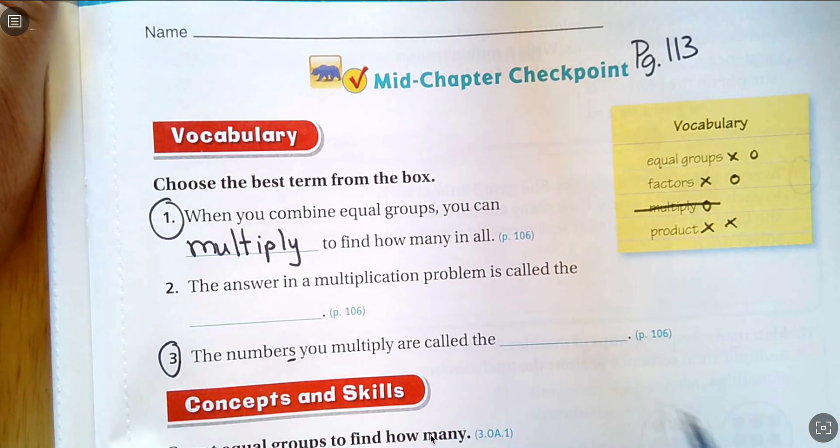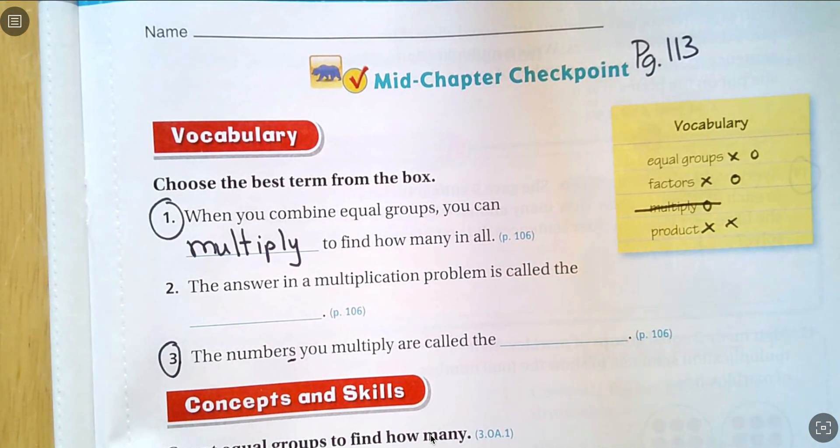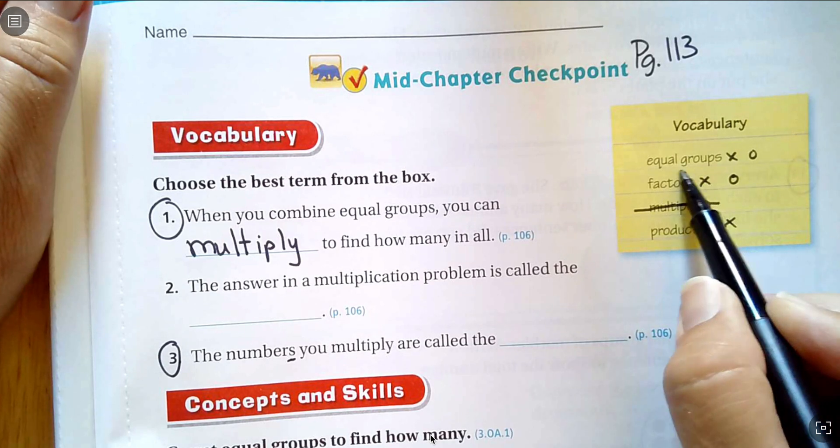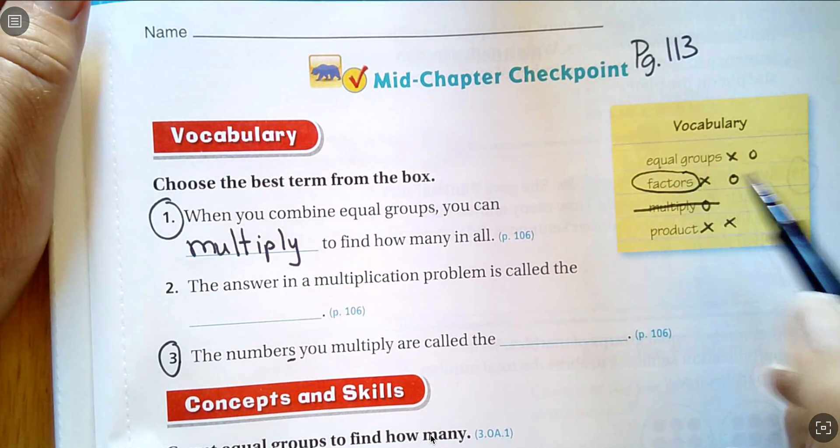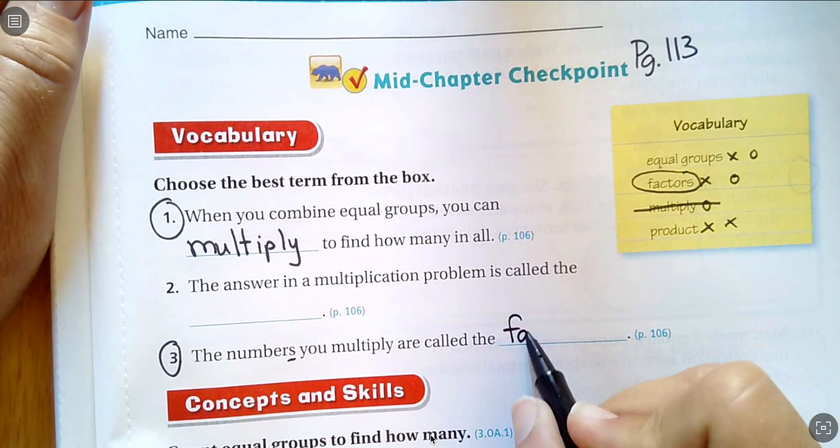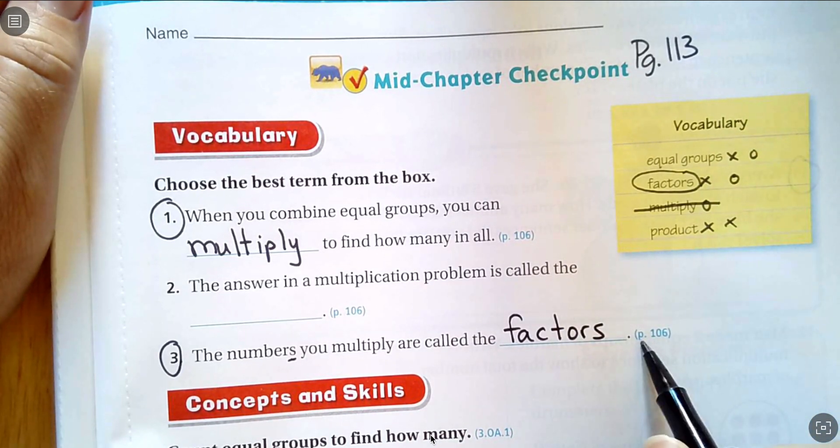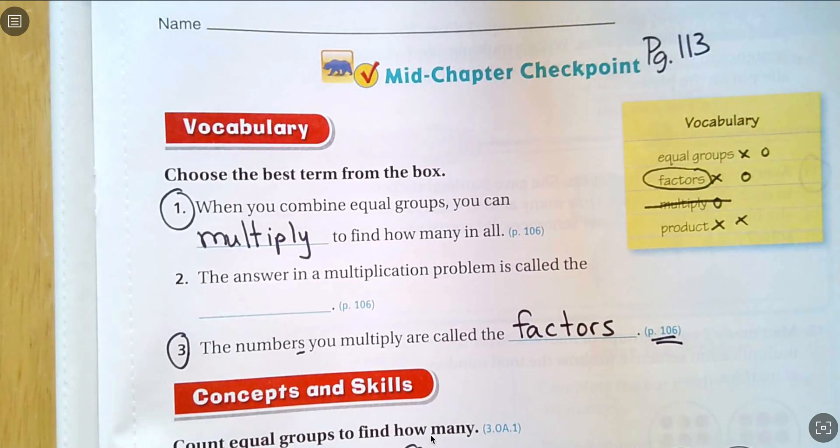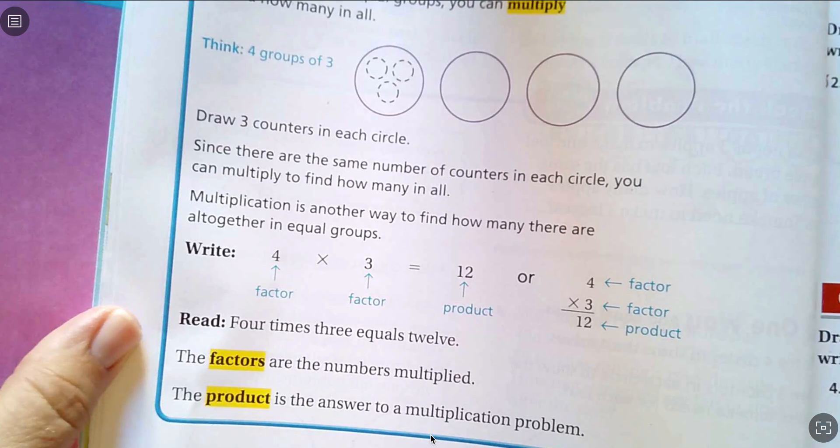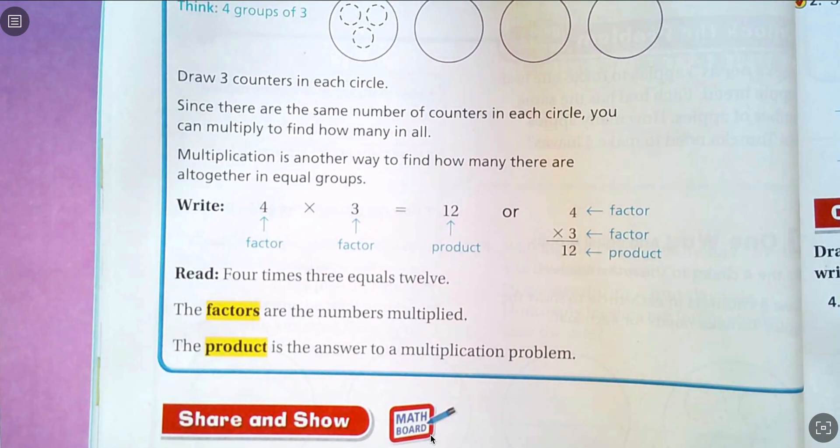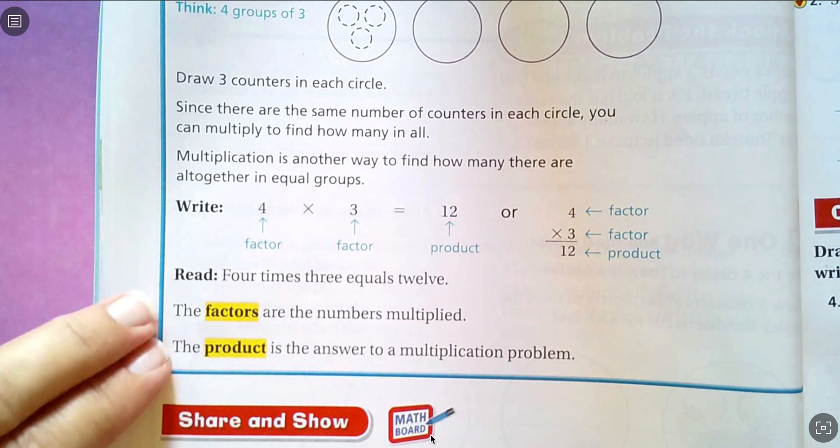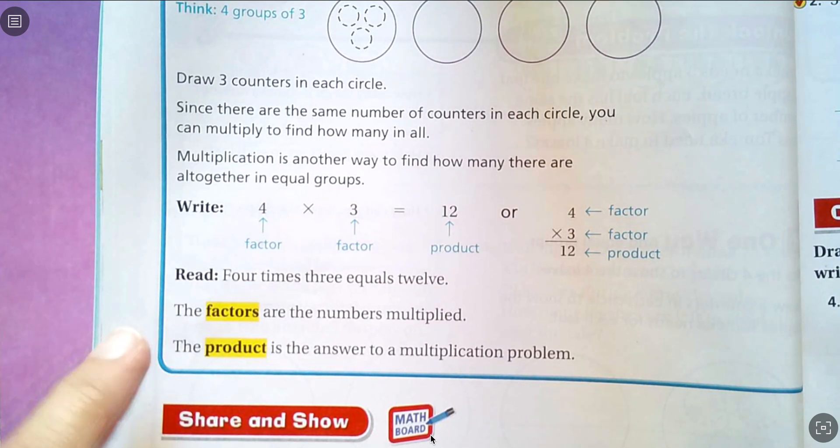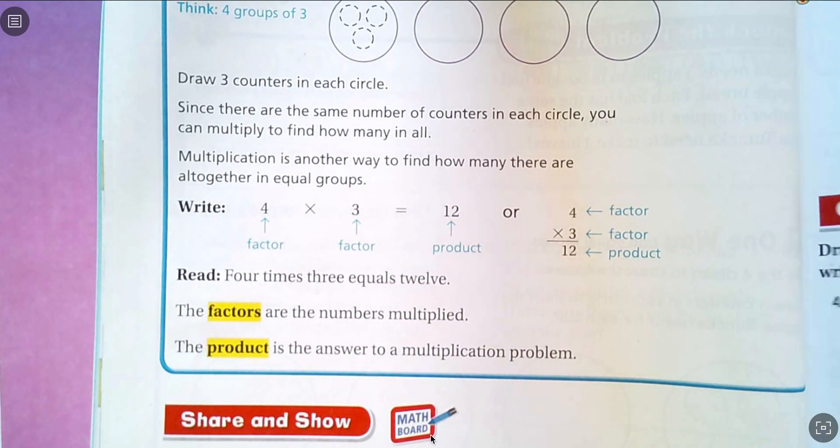So the numbers you multiply are called the equal groups. Could make sense. But this time it is factors. And it gives me a hint. I could go to page 106 and flip back to find the vocabulary. So in the mid chapter review, the factors are the numbers multiplied.